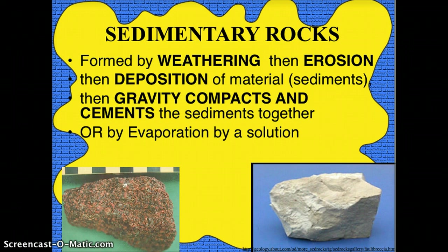The next group is sedimentary. These are formed by weathering, then erosion, then deposition of the sediments, then gravity compacts and cements the sediments together. Another way these can form is by evaporation of a solution, because there are some minerals that are classified as sedimentary rocks.